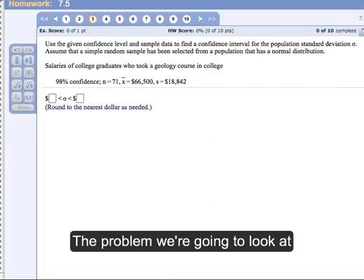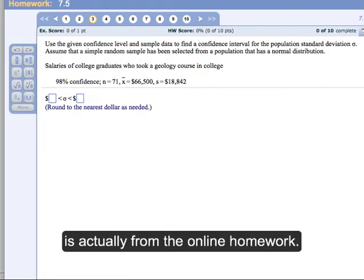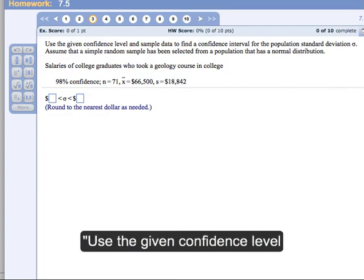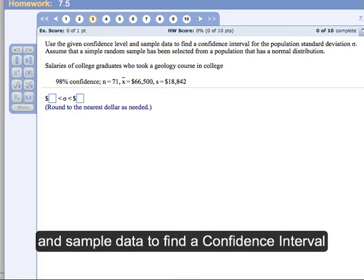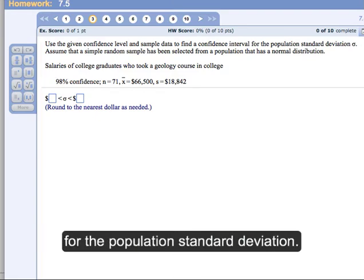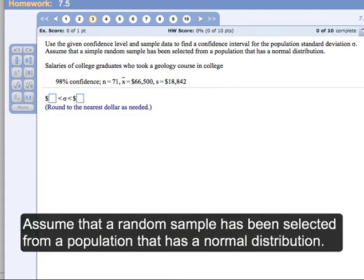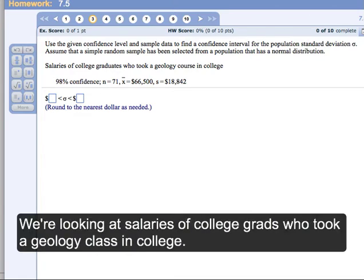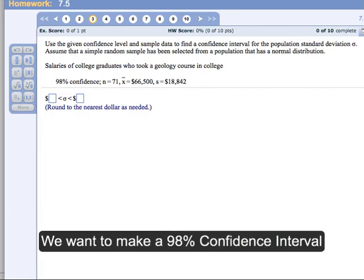The problem we're going to look at is from the online homework for Triola's book. Use the given confidence level and sample data to find a confidence interval for the population standard deviation sigma. Assume that a simple random sample has been selected from a population that has a normal distribution. We're looking at salaries of college graduates who took a geology course in college.